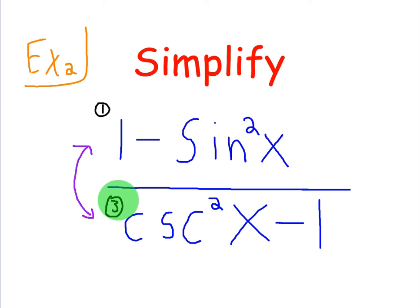So again, just always be on the lookout for which identities they look like. So how do we simplify 1 minus sine squared divided by cosecant squared minus 1? We will use both of those identities.